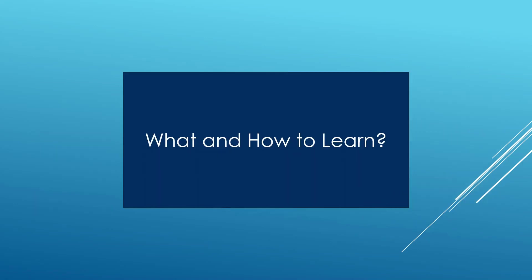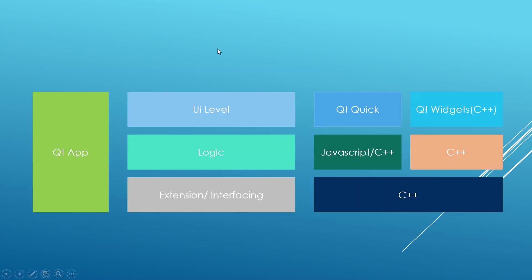A question I get from many students is what should you learn? If you are trying to develop applications for mobile and embedded, you should learn Qt Quick — start with the foundations of Qt Quick to get basic knowledge, learn to put in simple logic using JavaScript, and this will allow you to design full applications that can run on desktop, Android, iOS and embedded devices.